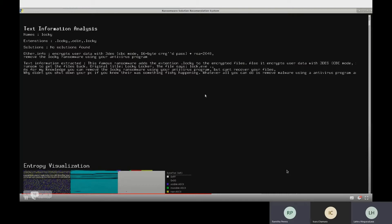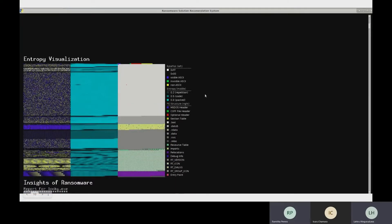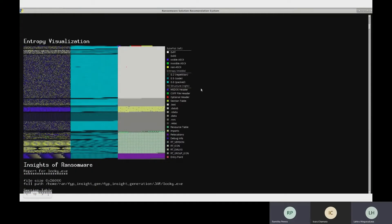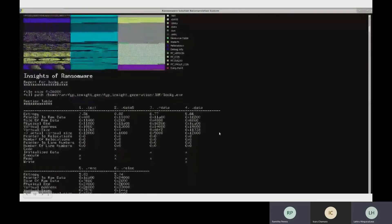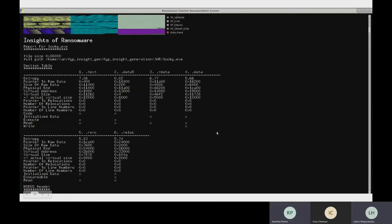After that, our third subsystem, the Ransomware Insight Generation System, provides these outputs: the entropy visualization and various insights about the ransomware.